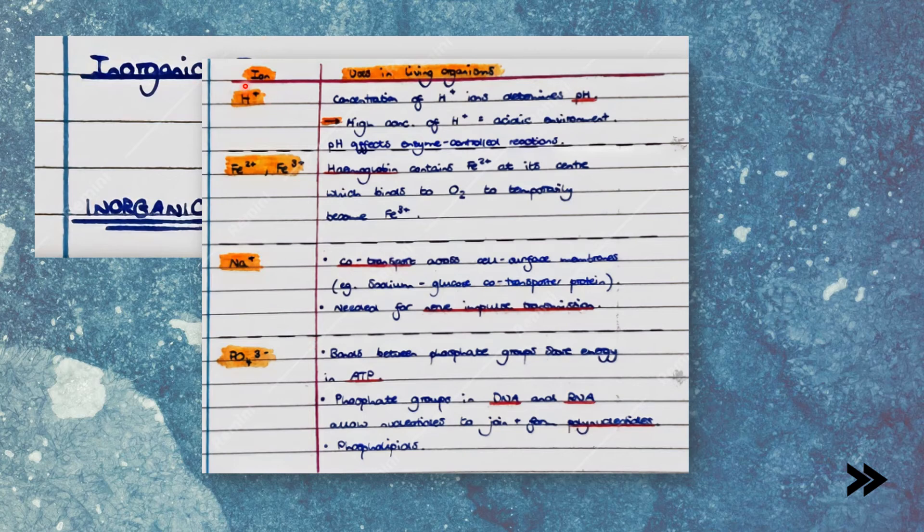For example, H+ ions, also known as protons. The concentration of H+ ions determines the pH. The higher the concentration of H+ ions, the more acidic the environment. And pH is important because it affects enzyme-controlled reactions.